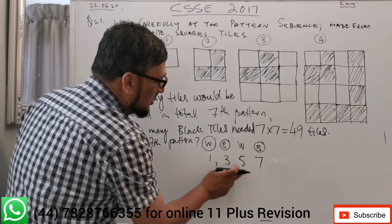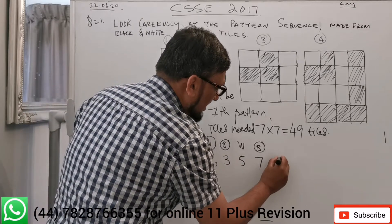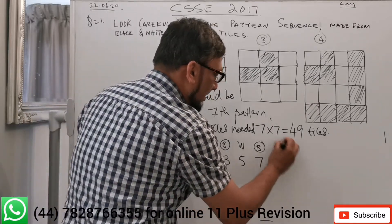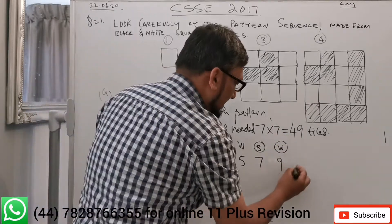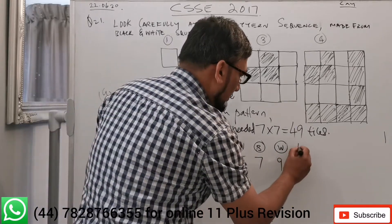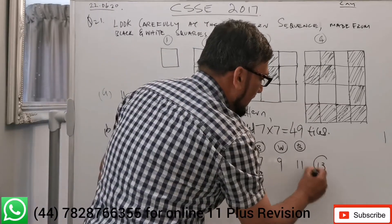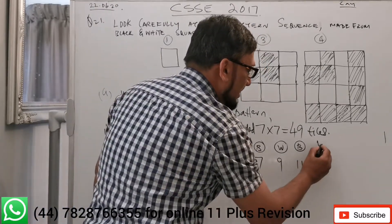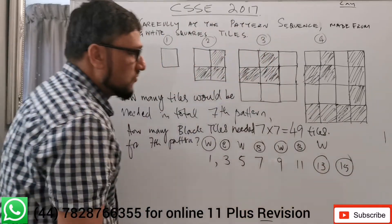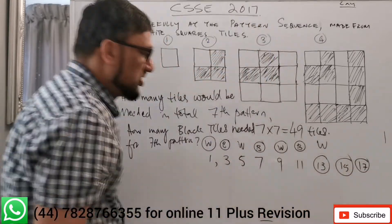Continuing the sequence: the fifth term is seven plus two, which is nine — white. Then nine plus two, which is 11 — black. Then 13 — white. Then 15 — black. And 17 would be the next, though I'm making a couple extra just for understanding.